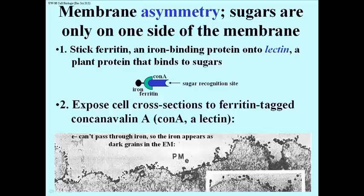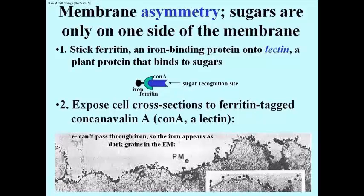If you look closely, you can see the trilamellar appearance of membranes in the electron microscope. Remember, you don't actually see phospholipids with their fatty acid tails and their phosphate hydrophilic heads — you can't see that in an electron microscope. But again, the iron particles are bound only to the outside of the cell. So that means that sugars are only found on the outside, or extracellular surface, of plasma membranes.